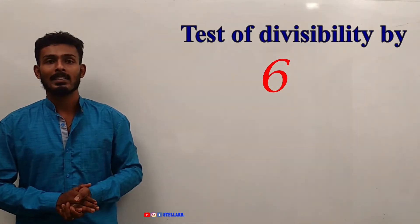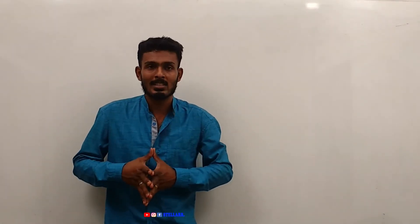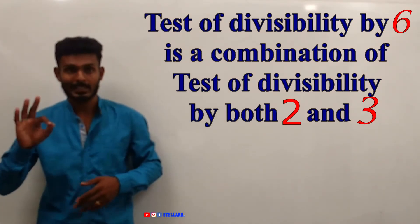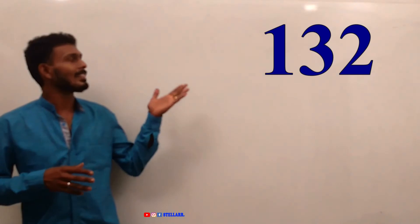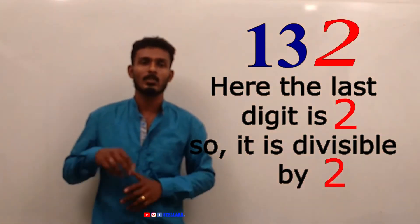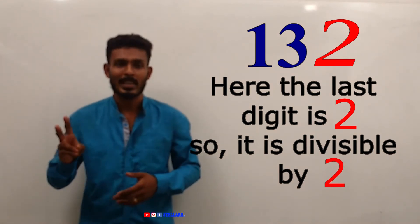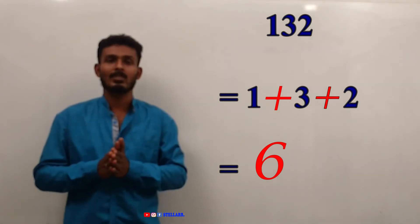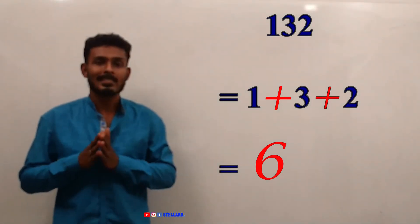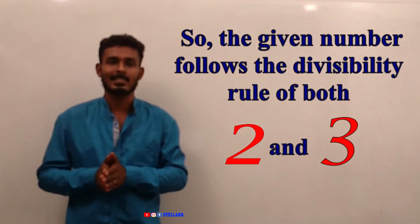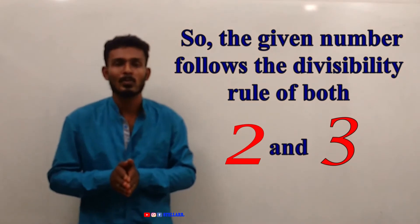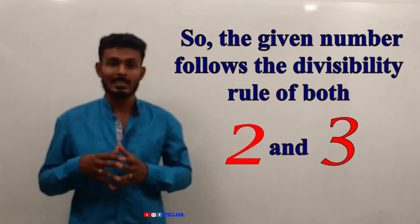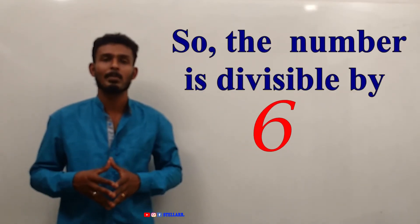Test of Divisibility by 6. The test of divisibility by 6 is a combination of the test of divisibility by both 2 and 3. Let us take an example: 132. Here, the last digit is 2, so it is divisible by 2. Again, we have to check the divisibility by 3 — we add the digits: 1 plus 3 plus 2, which gives 6. Since 6 is divisible by 3, the given number follows the divisibility rules of both 2 and 3, so the number 132 is divisible by 6.